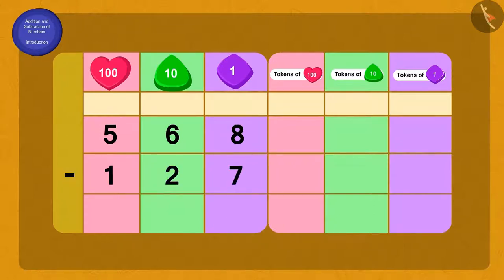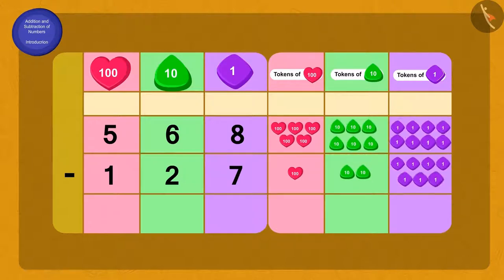We will write 568 and 127 this way using 1, 10, and 1 digit places like this in the place value chart.